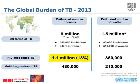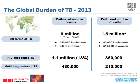Over 1 million of the 9 million cases were among people living with HIV, which means 30% of the total cases, with 360,000 people dying because of tuberculosis being HIV positive.